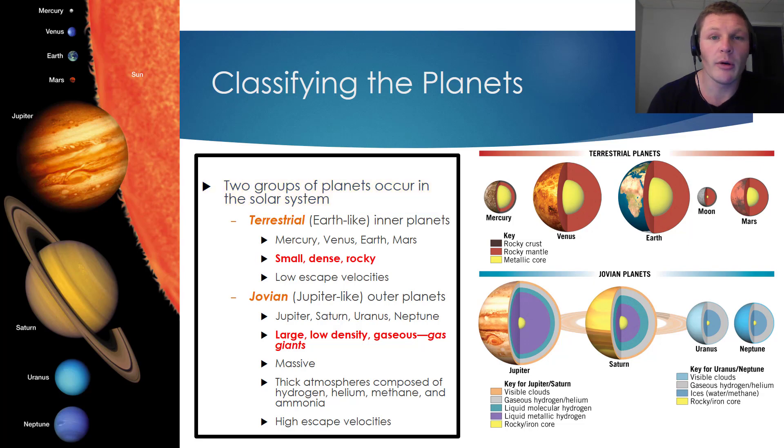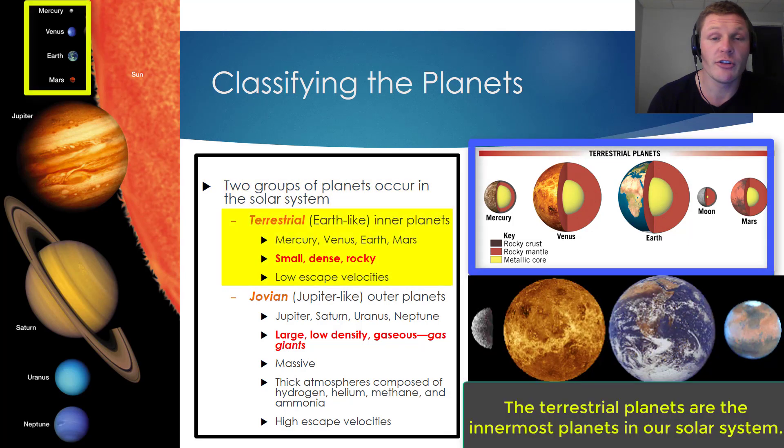The first group of planets that we will consider are the terrestrial planets, which are the Earth-like planets. The terrestrial planets include the four innermost planets, specifically Mercury, Venus, Earth, and Mars. It's very important to know that these planets have three characteristics in common. They're small, they're dense, and they're rocky.